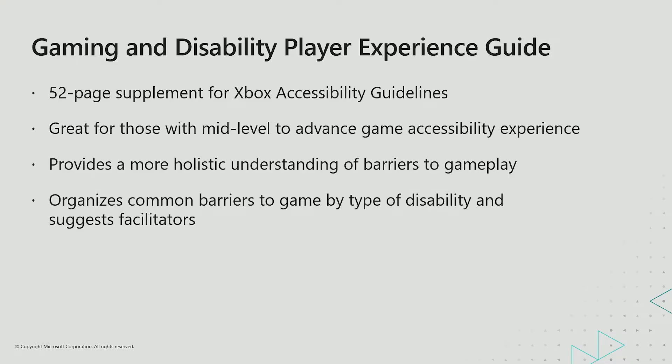Released in 2021, this guide is intended to help game developers and designers with an intermediate to advanced understanding of accessibility gain a more holistic understanding of the barriers that players with certain types of disabilities may experience when game mechanics, video, audio, input, and other aspects of the game's design are not developed with accessibility in mind. The information in this guide can be used during early planning and prioritization phases of game development to help scope accessibility goals and identify potential facilitators. It can also be used as a source of foundational knowledge to help developers prepare for conversations with the gaming and disability community.